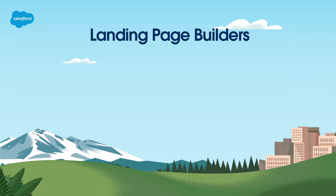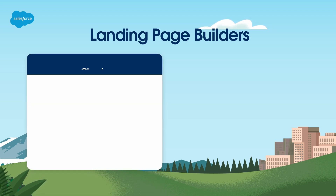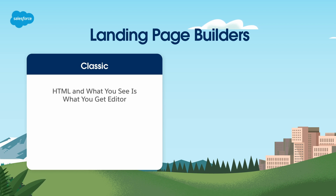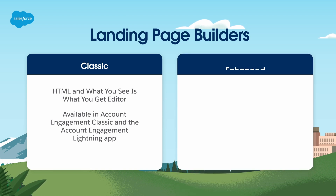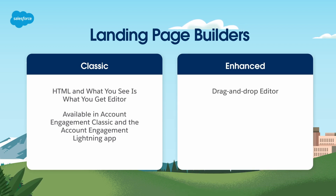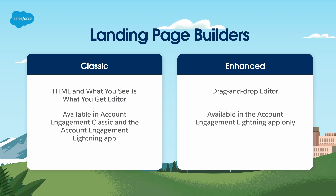Now let's explore the two types of landing page builders available in Marketing Cloud Account Engagement. The classic landing page builder is an HTML and what-you-see-is-what-you-get editor available in Account Engagement Classic and the Account Engagement Lightning app. The enhanced landing page builder is a drag-and-drop editor built on Salesforce, available in the Account Engagement Lightning app only. It supports list views, actions, reporting, and other Salesforce Lightning Experience functionalities.